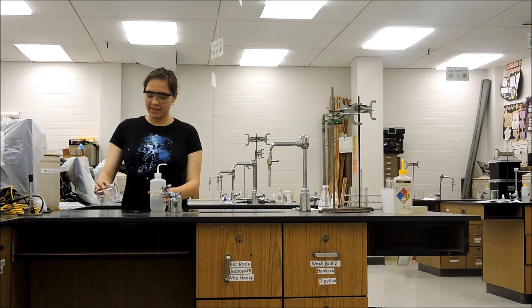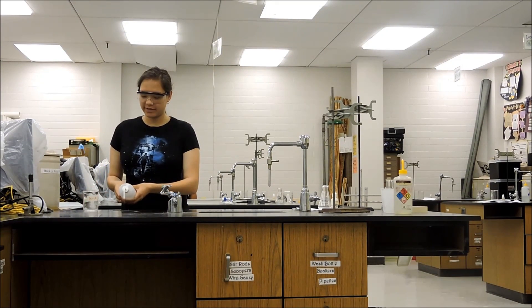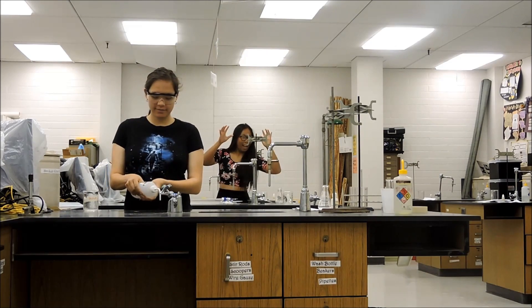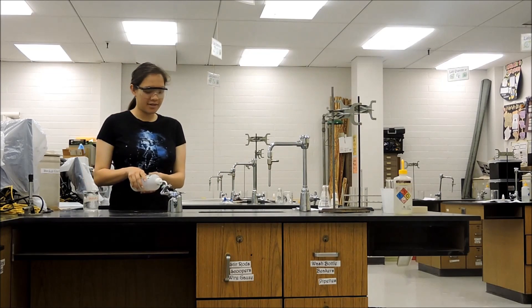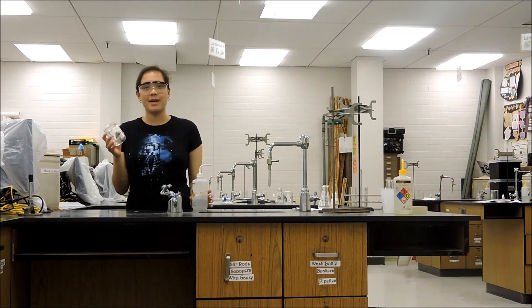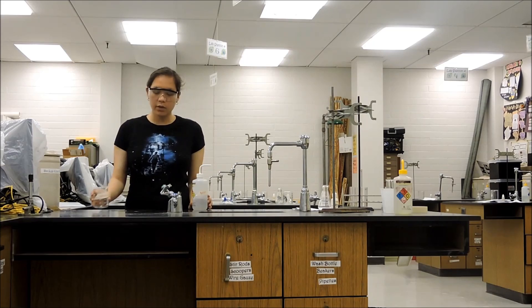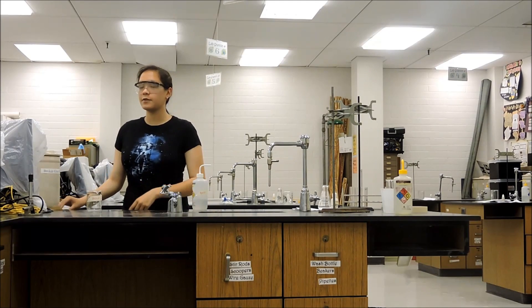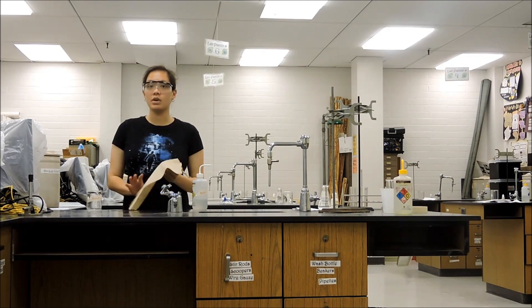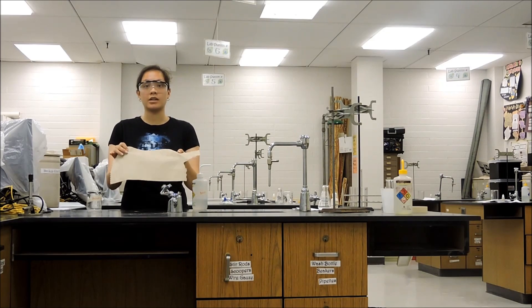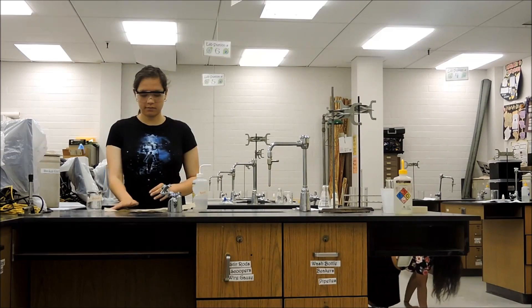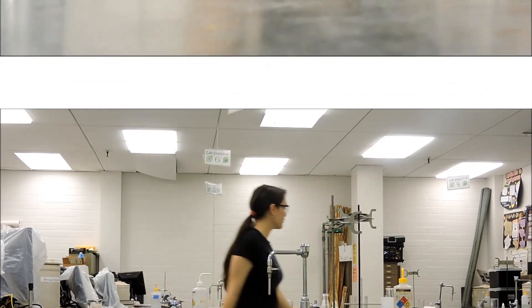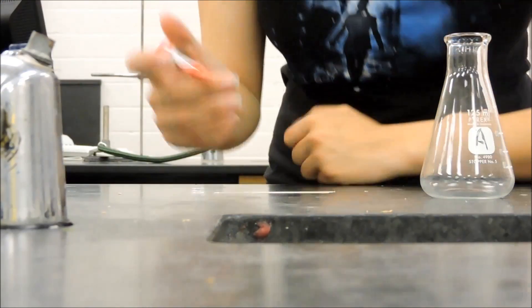Rule number 14, if you drop the acid, pour some base on it. If you drop the base, pour some acid on it. By doing so you will neutralize the chemicals making it safe to wipe up. This will be really important to know during your acid-base titration lab. Rule number 15, label everything.